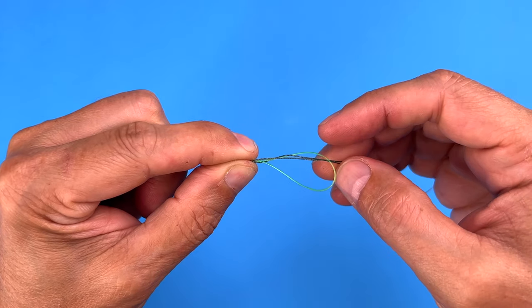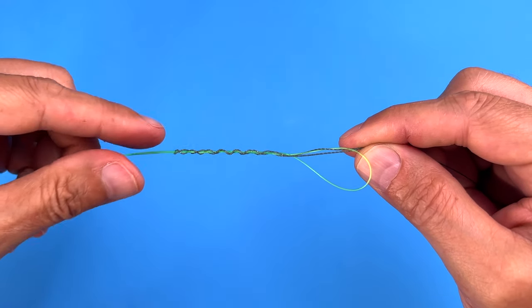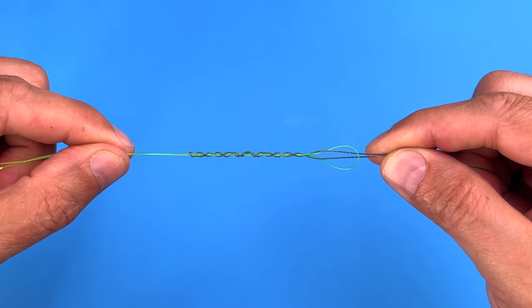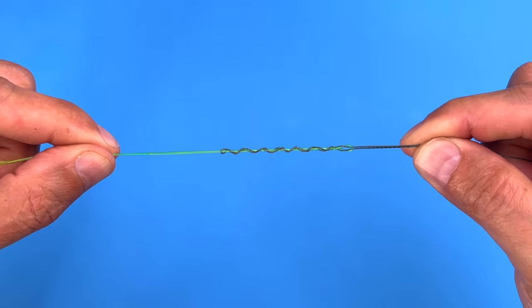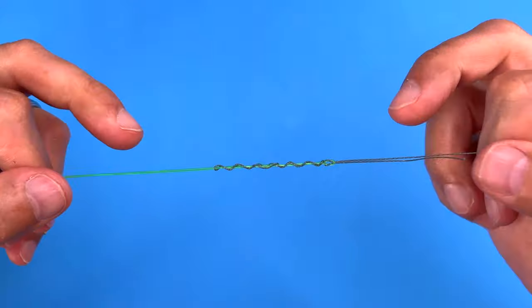Now you're going to take the tag end of the braid and the main line of the braid, and then you're going to take the tag end of the lead and the lead and pull them apart. And keep pulling.